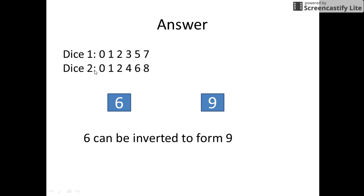The answer to this puzzle is: dice 1 should show 0, 1, 2, 3, 5, and 7 on its faces, while dice 2 should have 0, 1, 2, 4, 6, 8 printed on its faces.